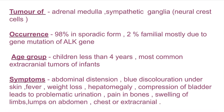The symptoms are abdominal distension, blue discoloration under the skin — that means bruising — and fever and weight loss. Also hepatomegaly and compression of the bladder. If any abdominal mass or tumor is present inside, it leads to compression of the bladder or other organs, causing problematic urination. There may also be bone pain, swelling in the limbs, and lumps formed in the abdomen, chest, or extracranial regions.